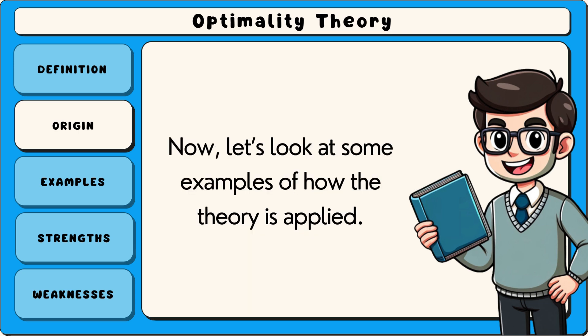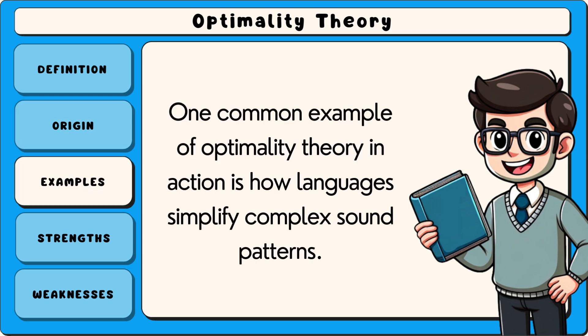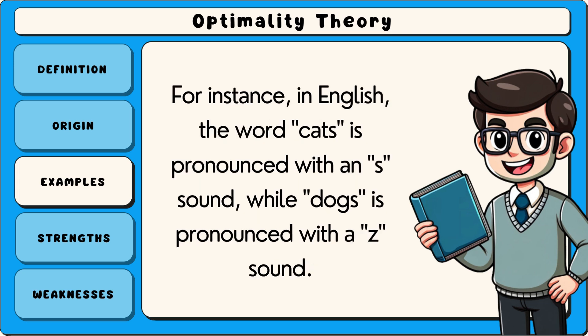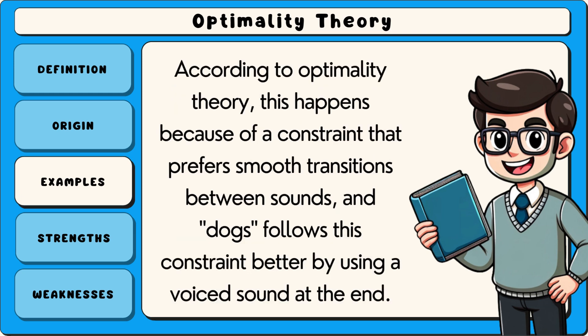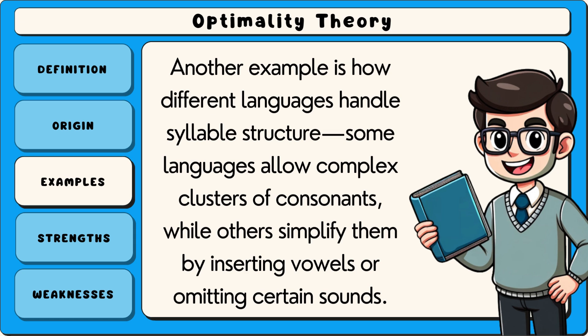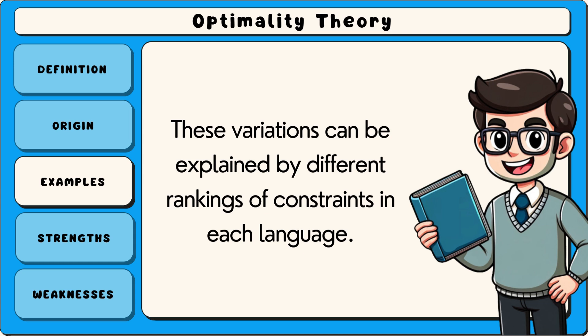One common example of optimality theory in action is how languages simplify complex sound patterns. In English, the word 'cats' is pronounced with an S sound while 'dogs' is pronounced with a Z sound. According to optimality theory, this happens because of a constraint that prefers smooth transitions between sounds, and 'dogs' follows this constraint better by using a voiced sound at the end. Another example is how different languages handle syllable structure — some allow complex clusters of consonants, while others simplify them by inserting vowels or omitting certain sounds. These variations can be explained by different rankings of constraints in each language.